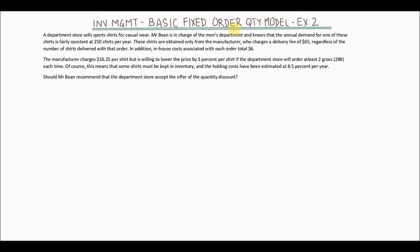The second model is the fixed period type, where the time period for ordering is fixed — that means it can be every Sunday of a week or every first Monday of a month — but the quantity that is being ordered can vary.